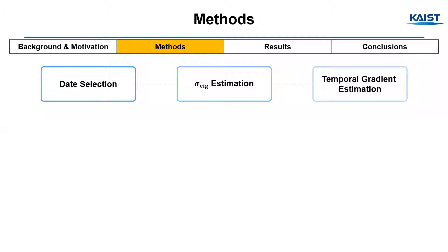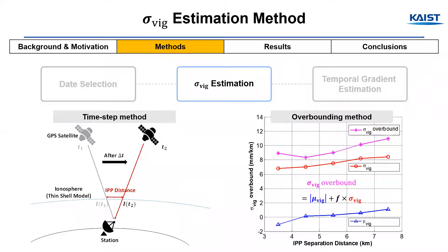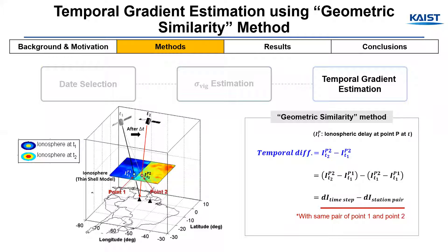I'd like to briefly describe the methods used in this paper. Data for ionospheric nominal days were selected from ionospheric active days already identified by the Phase 1 GBAS Brazilian threat model study. Within this dataset, we selected a total of 9 dates using the two criteria shown in the slide. We used the timestamp method to estimate ionospheric gradients, and the sigma-overbounding method was used to assess the nominal sigma-vig value. This study also evaluates the temporal gradient effect added to the bounded sigma-vig introduced by the timestamp method. The temporal delay difference could be estimated with a linear combination of estimates from the timestamp method and the station pair method. We call this temporal gradient estimation method geometric similarity.